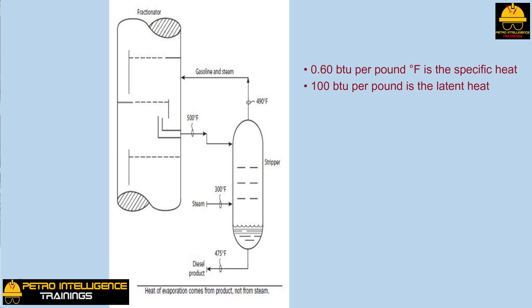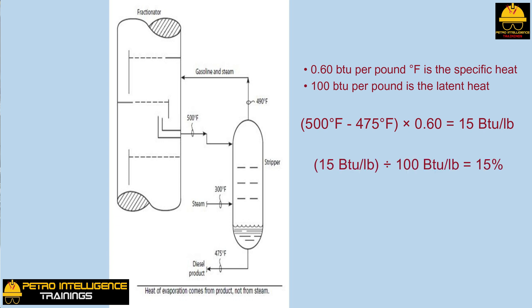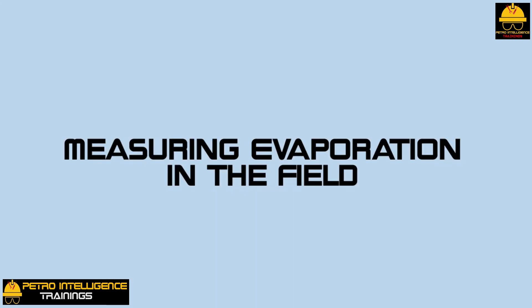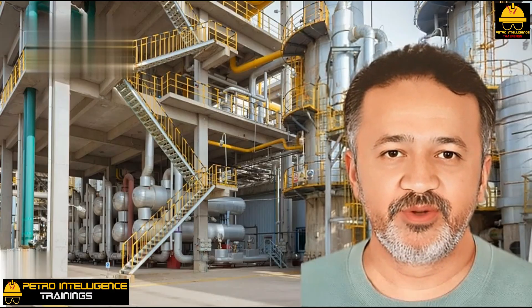We can use this idea to calculate the percent of diesel oil that would actually vaporize across the stripping trays. Assuming typical thermal properties: specific heat of 0.60 BTU per pound degree F, and latent heat of 100 BTU per pound. The reduction in sensible heat of the diesel product equals 500 to 475 degrees Fahrenheit times 0.60, which equals 15 BTU per pound. The percent of the feed to the stripper that evaporates is then 15 BTU per pound divided by 100 BTU per pound, equal to 15 percent.